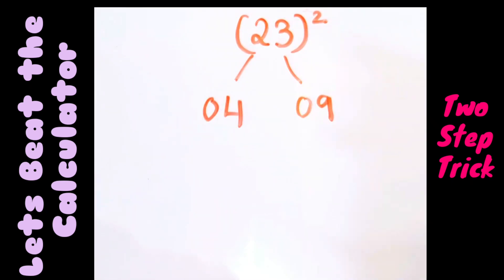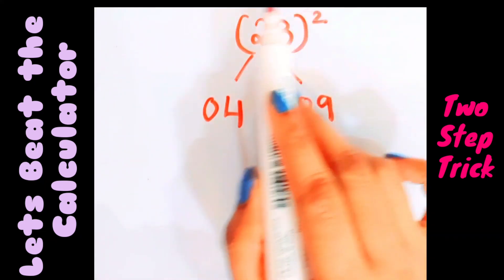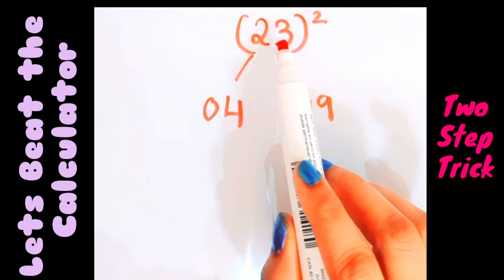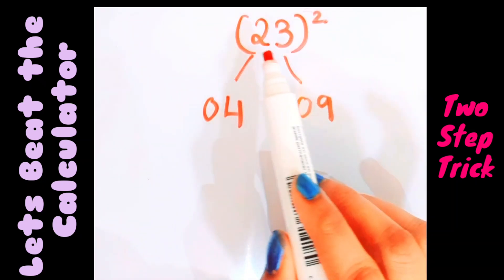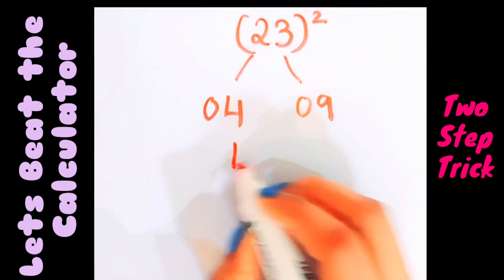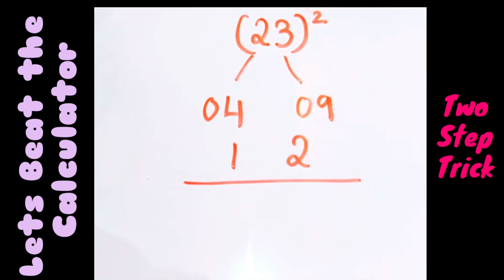Next, the second step is we have to multiply all the numbers that are in the question. That is, we have 2, we have 3, we have 2. So 2 into 3 is 6, 6 into 2 is 12. Write it over here.